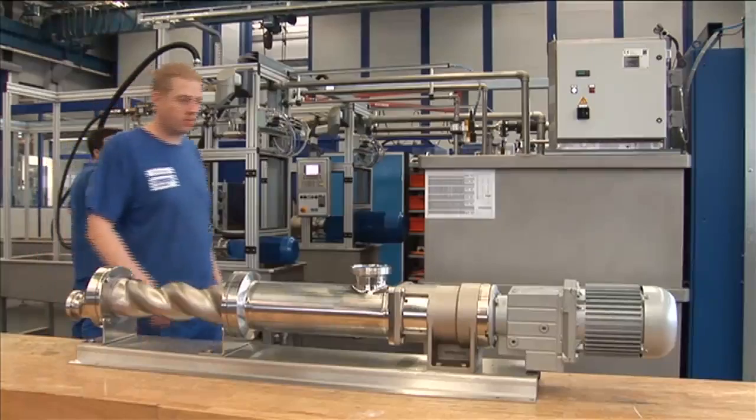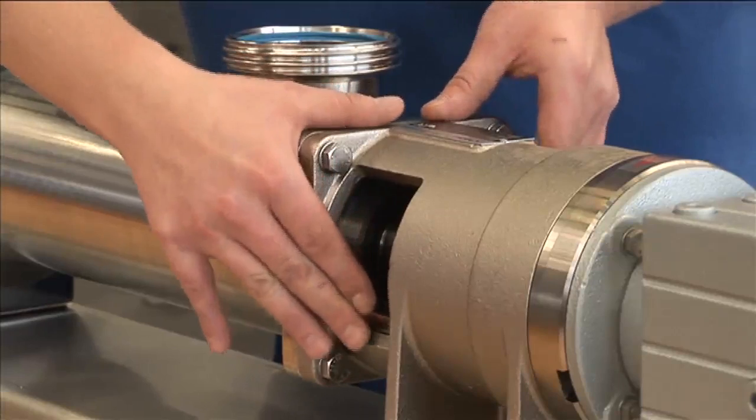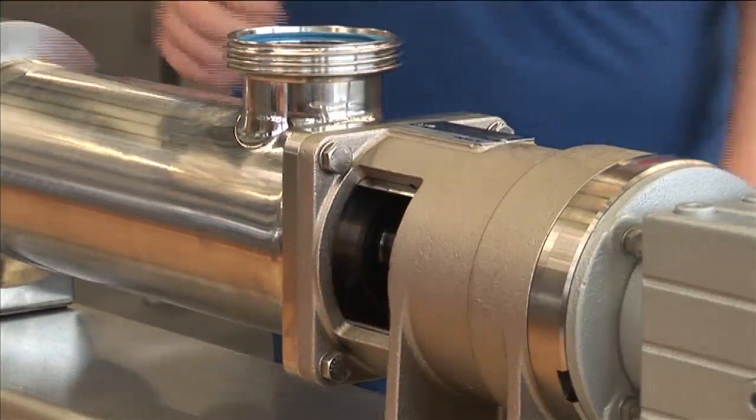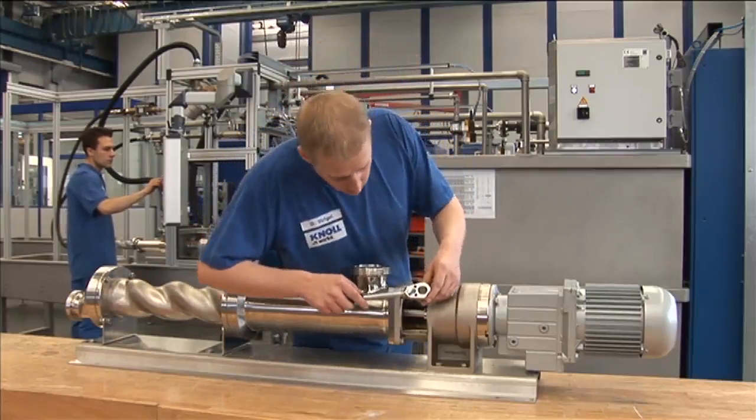The service technician must detach the rotating unit and the interface between the bearing block and suction housing through the service window to change the main shaft seal.